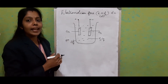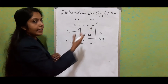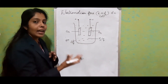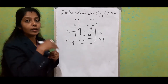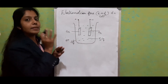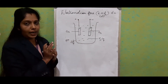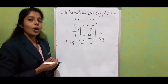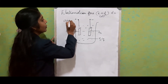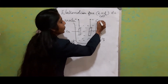Zinc accepts electrons from the SO4 ions, so zinc becomes the negative electrode and copper becomes the positive electrode. The positive electrode is known as the anode and the negative electrode is known as the cathode.